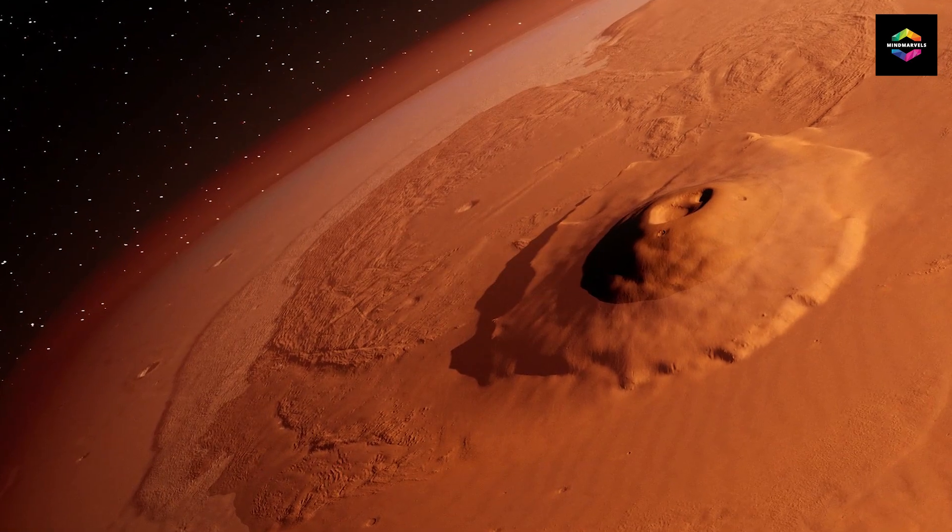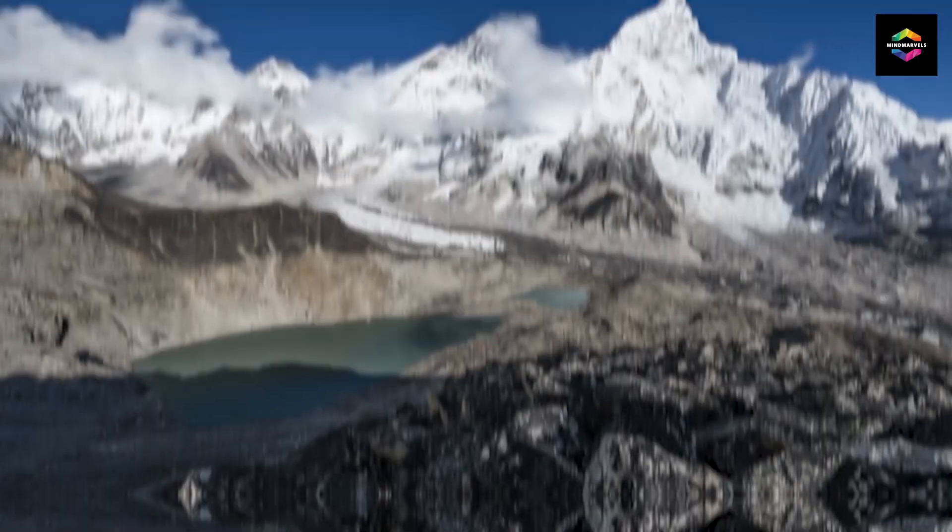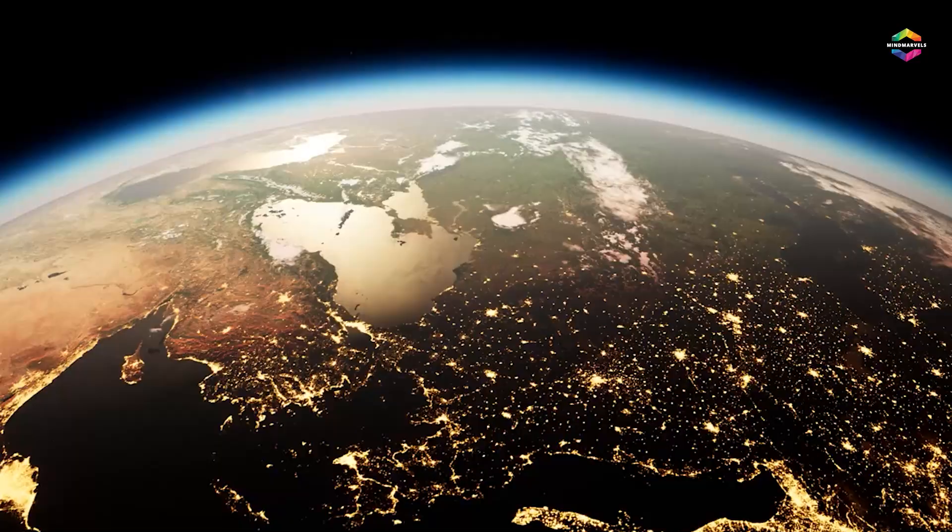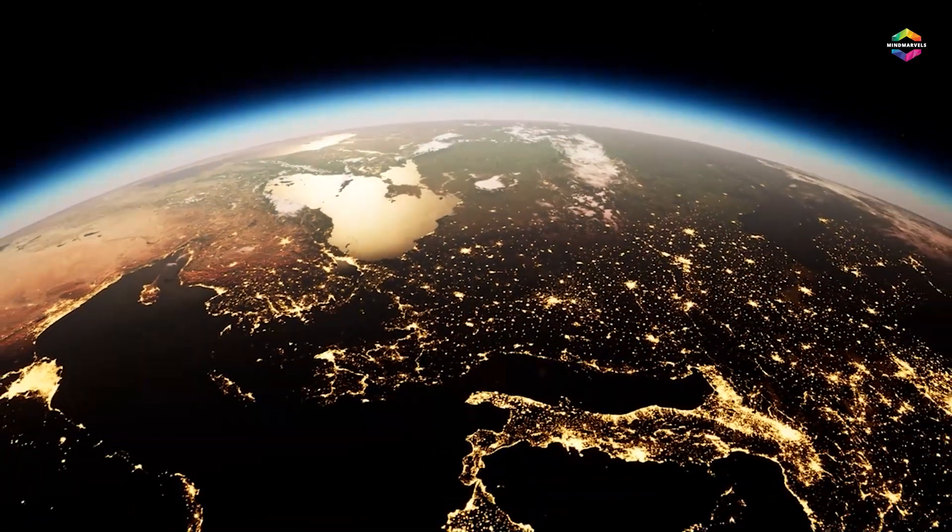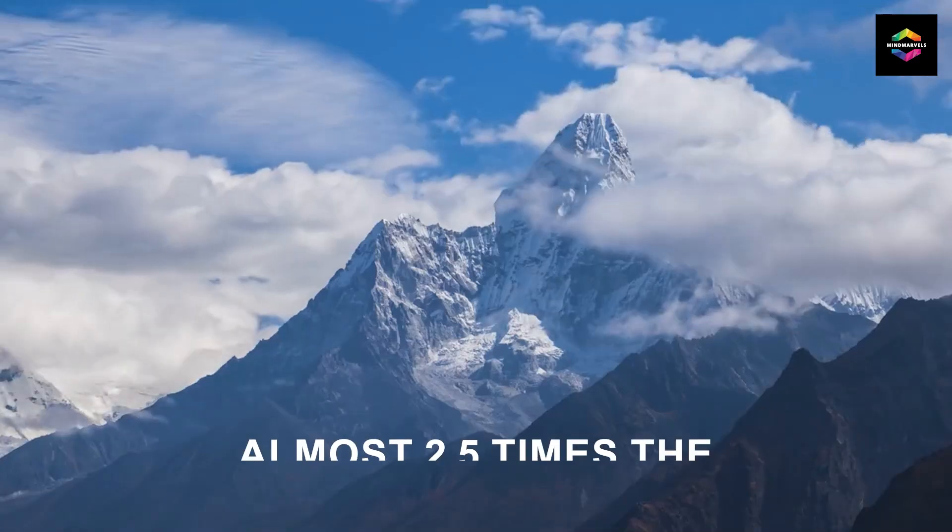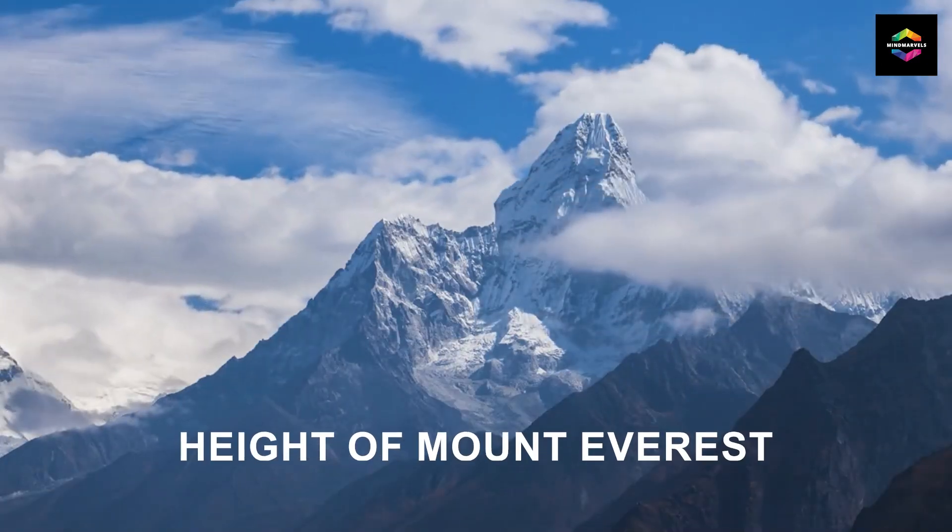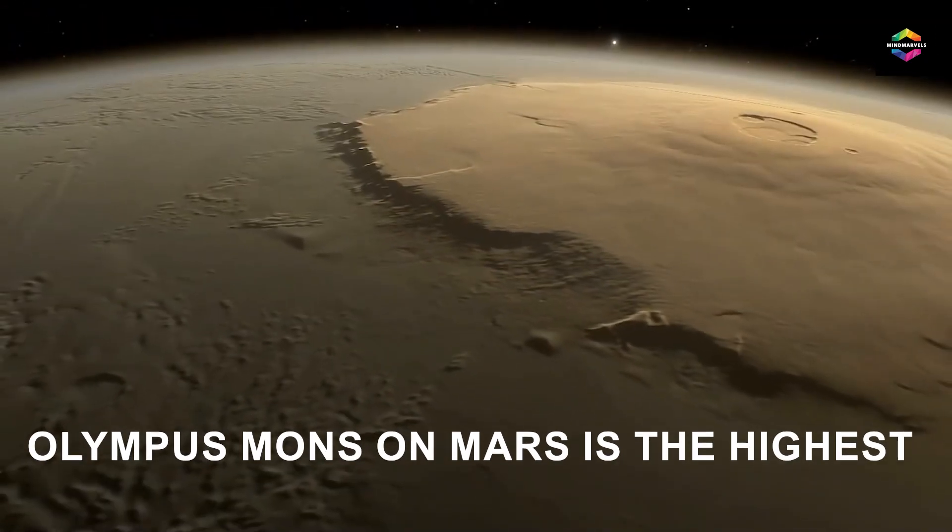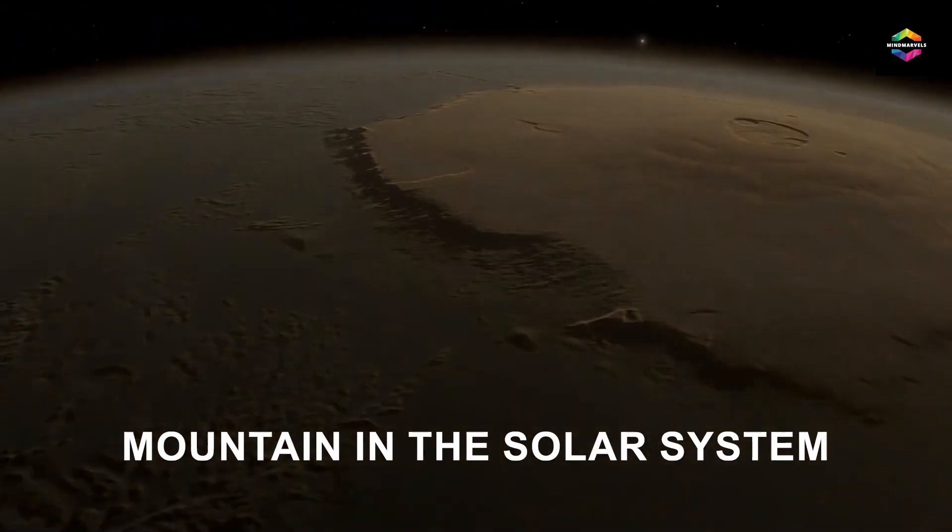Number two, the highest mountain in the solar system is on Mars. Is that Mount Everest? Well, not at all. It's not even on Earth. Standing at a height of nearly 21 kilometers, or almost 2.5 times the height of Mount Everest, Olympus Mons on Mars is the highest mountain in the solar system.